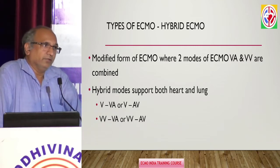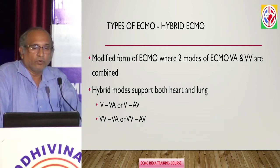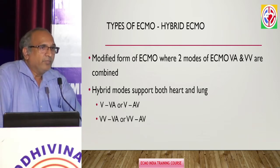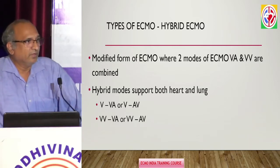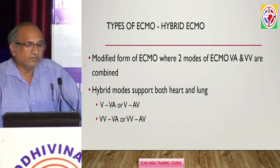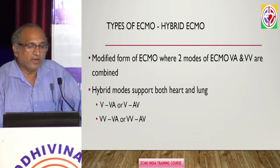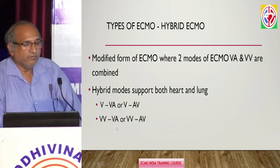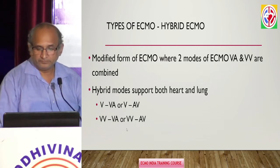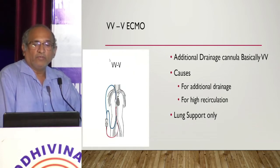When we talk about hybrid ECMO, it means two modes of ECMO are combined — VA plus VV are combined together. The importance of hybrid ECMO is that it supports both the heart as well as the lungs. There may be one drainage and two returns, giving VA-V or VV-AV, or two drainages and two returns — VVVA and VVAV.